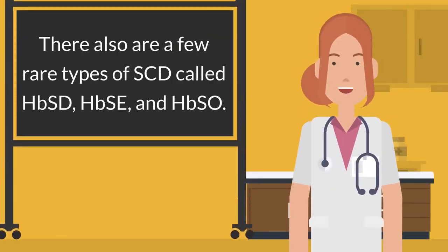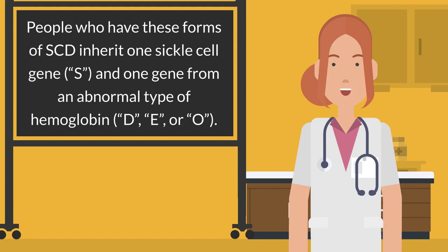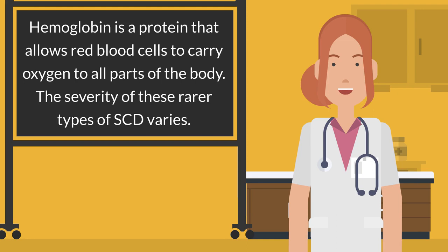There are also a few rare types of SCD called HbSD, HbSE, and HbSO. People who have these forms of SCD inherit one sickle cell gene (S) and one gene from an abnormal type of hemoglobin D, E, or O. Hemoglobin is a protein that allows red blood cells to carry oxygen to all parts of the body. The severity of these rarer types of SCD varies.